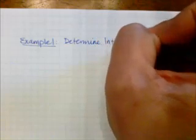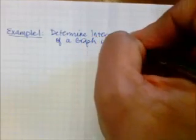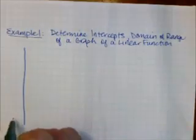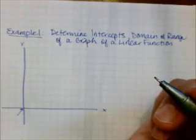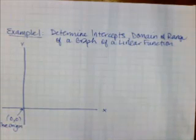Let's get started on example number one. We're going to determine the intercepts — the y-intercept and the x-intercept — and also figure out the domain and range of a graph. These will all be linear. Does everybody know what the spot where the y-axis and the x-axis meet is called? That's known as the origin — it has the coordinates (0, 0).